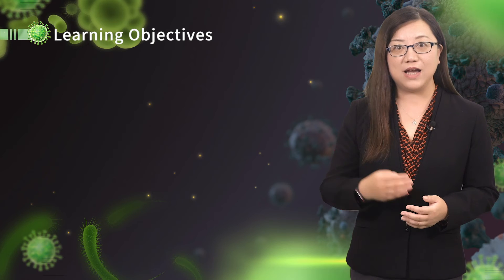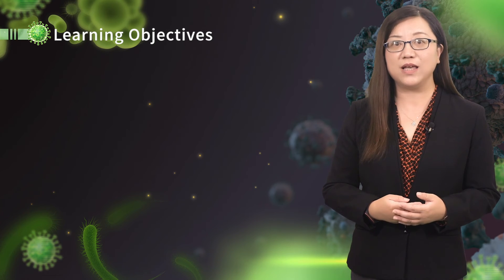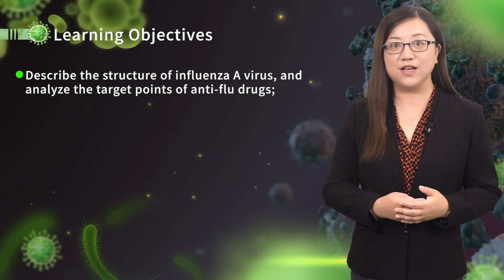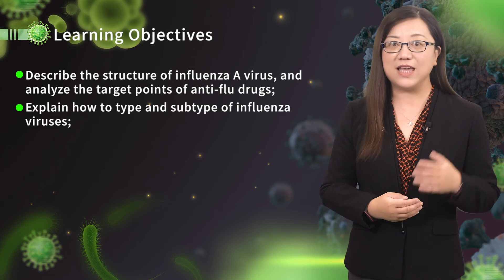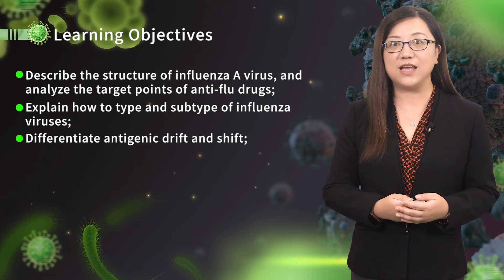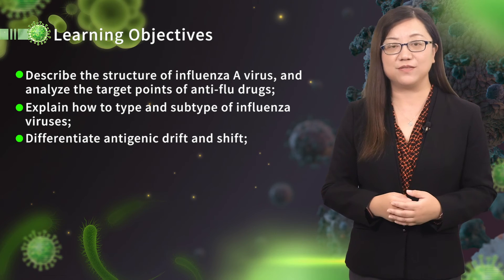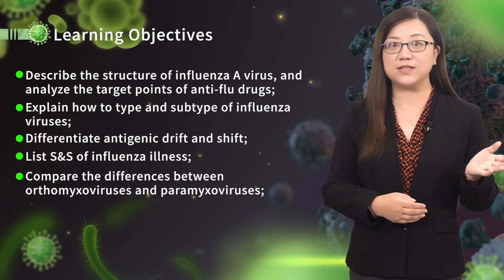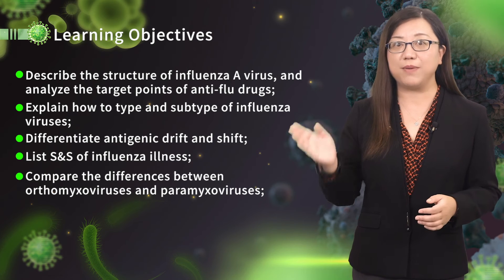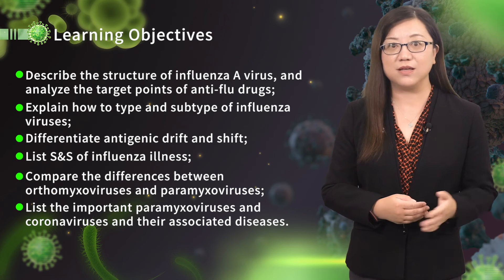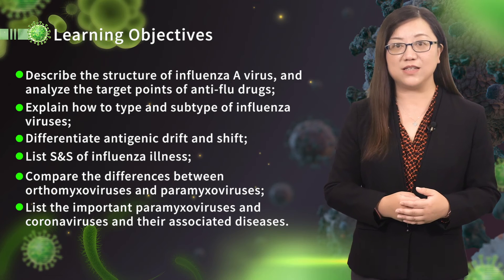This slide shows you the learning objectives of this chapter. At the end of this chapter, you should be able to: describe the structure of influenza A virus and analyze the target points of anti-flu drugs; explain how to type and subtype influenza viruses; differentiate antigenic drift and shift; list symptoms and signs of influenza illness; compare the differences between Orthomyxoviruses and Paramyxoviruses; and list the important Paramyxoviruses and coronaviruses and their associated diseases.